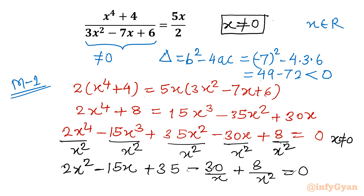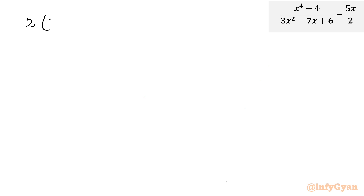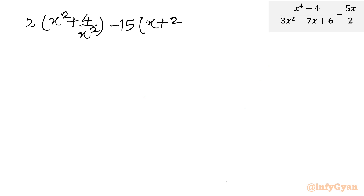After dividing by x square, we get: 2x square minus 15x plus 35 minus 30 over x plus 8 over x square equal to 0. Now I will consider the first and last terms together, and the second and second-last terms together. It will become: 2 times (x square plus 4 over x square) minus 15 times (x plus 2 over x) plus 35 equal to 0.